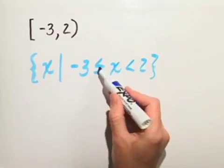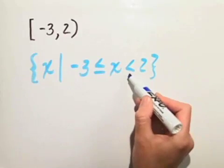Now, notice I put a less than or equal to sign here, but just a strict inequality, the less than sign, here.